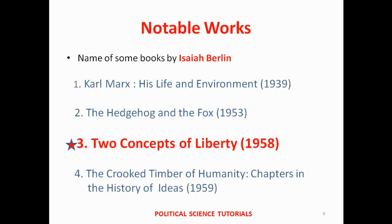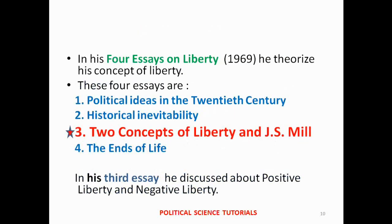Berlin wrote many books. His first book was Karl Marx: His Life and Environment, published in 1939. Another book, The Hedgehog and the Fox, was published in 1953. An important essay, Two Concepts of Liberty, was published in 1958 — the topic of our discussion. Another famous book, The Crooked Timber of Humanity: Chapters in the History of Ideas, was published in 1959. He also wrote Four Essays on Liberty, published in 1969.